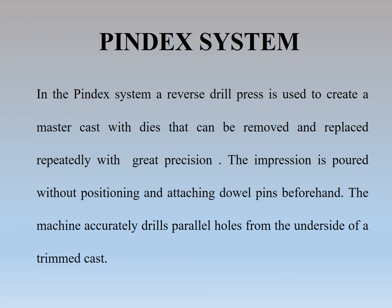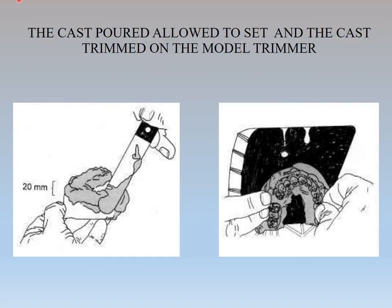Coming to the Pindex system — a reverse drill system used to create a master cast with dies that can be removed and replaced repeatedly with greater precision. The impression is poured without positioning and attaching dowel pins beforehand. The machine accurately drills parallel holes from the underside of the trimmed cast. The cast is poured normally, allowed to set, and trimmed on the model trimmer. After trimming, the cast should be at least 15 mm thick from the cervical portion of the teeth.